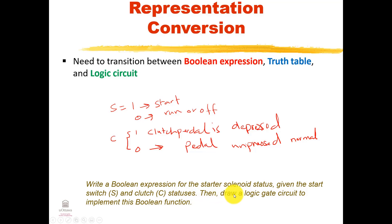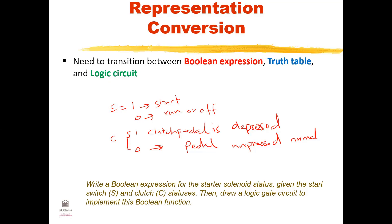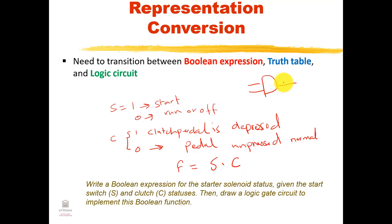As a mechanical engineer, you are supposed to write a Boolean expression for the starter solenoid status given the start switch and the clutch, and then draw a logic gate circuit to implement that Boolean function. We need the engine to start when both of them are active, so the function F equals S AND C, implemented by simply an AND gate where S and C are inputs and F is the output.